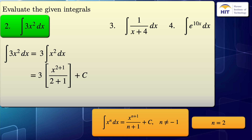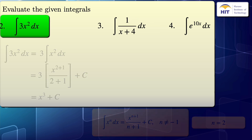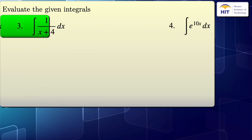our result will be 3 times x to the power of 2 plus 1 divided by 2 plus 1 plus c. Since 2 plus 1 is equal to 3, this 3 and this 3 will cancel, and our final result will be x cubed plus the constant of integration, c.